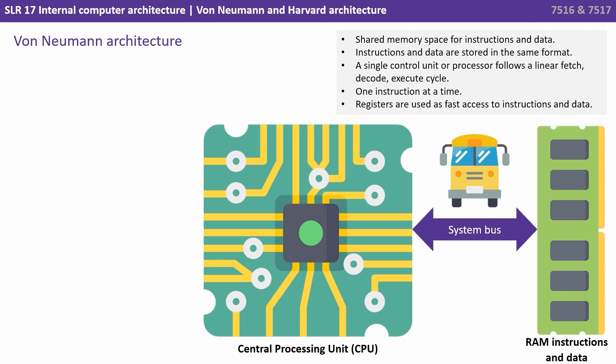So let's start with the von Neumann architecture. This has a shared memory space for instructions and data. Instructions and data are stored in the same format. A single control unit or processor follows a linear fetch-decode-execute cycle, doing one instruction at a time. Registers are used as fast access to instructions and data.